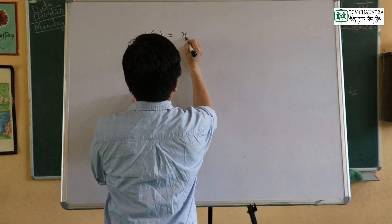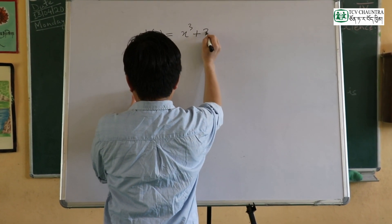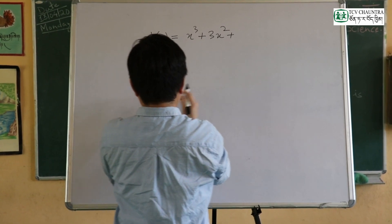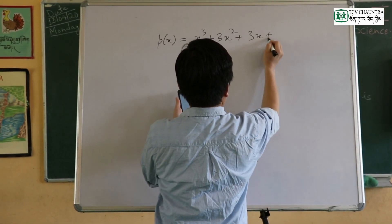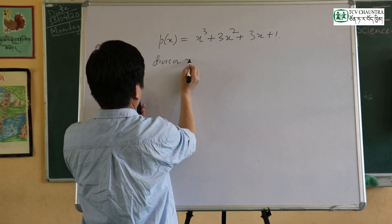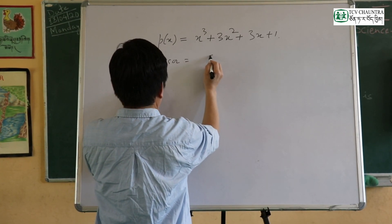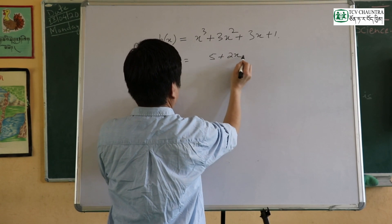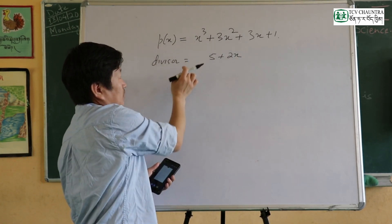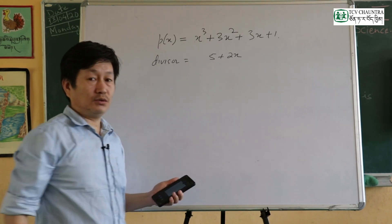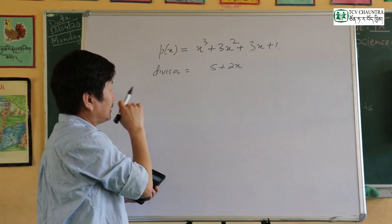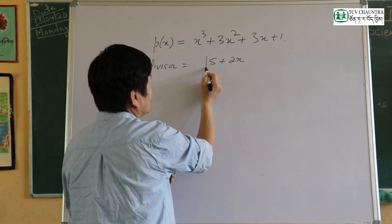Here, the polynomial p(x) is x cubed plus 3x squared plus 3x plus 1. I'm going to divide it by 5 plus 2x. Find the remainder when polynomial p(x) is divided by 5 plus 2x. That's what I'm going to talk about.